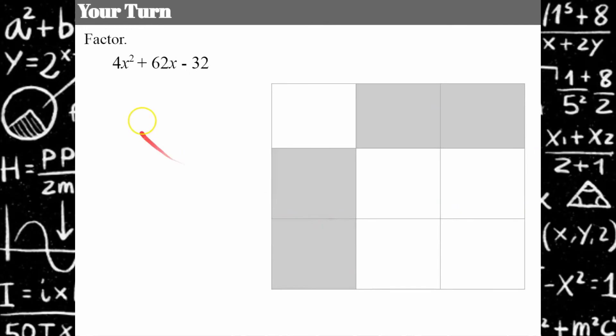Here's another one for you. Now you have 4x² + 62x - 32. I'm going to give you a hint. Remember our first step to factoring is to look for a greatest common factor. Please pause, factor, and come back when you're ready.